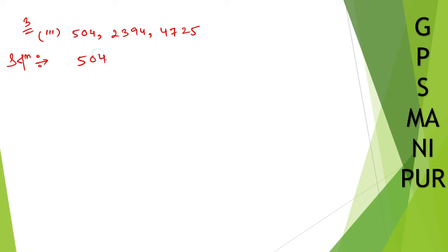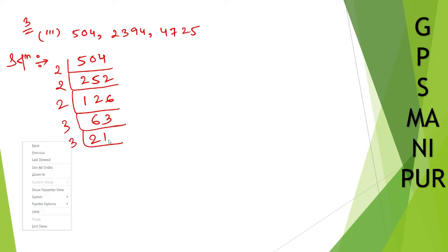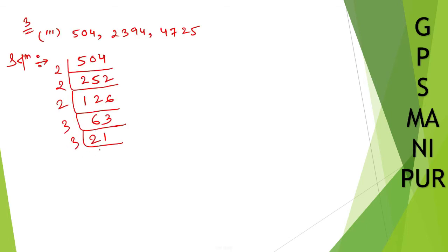504, 2394, and 4725. I can write down the solution. For 504, I can use prime factorization method. Let me divide by 2: 252, then 126, then 63. By 3: 21. By 7. So I can write down 504 is 2 into 2 into 2 into 3 into 3 into 7.